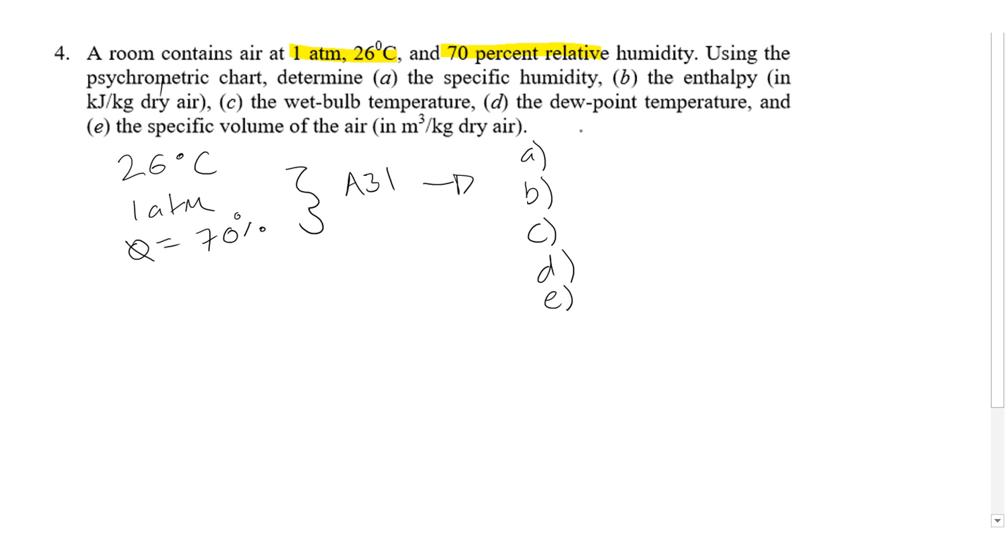Same order, same values as last time: specific humidity, enthalpy, wet bulb temperature, dew point temperature, and specific volume.